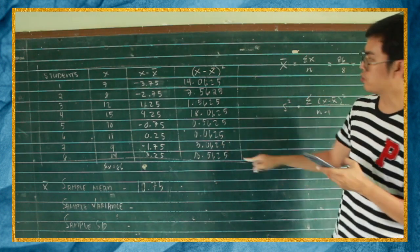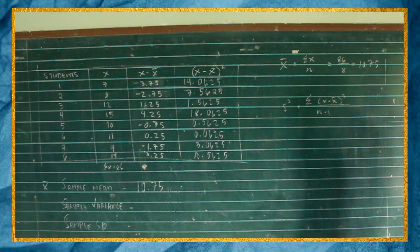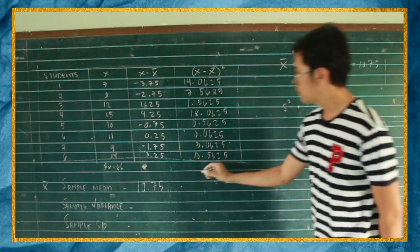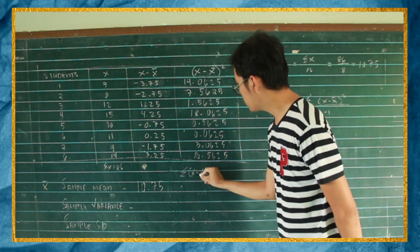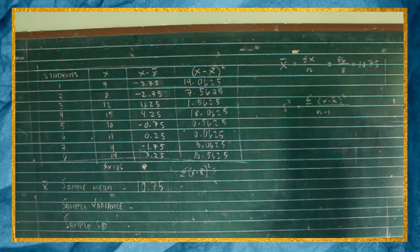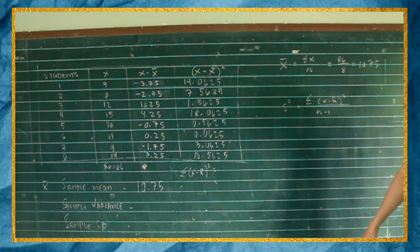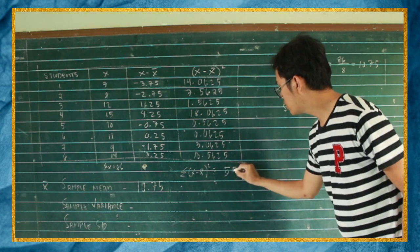So, ito lang yun yung complete. Ngayon, ang kailangan nyo lang dyan ay yung summation ng following na ito. So, kailangan yung summation ng x minus x bar squared. So, kailangan na siyang i-add lahat. So, magiging total niyan is 55.5.